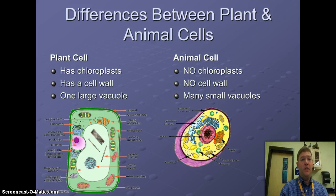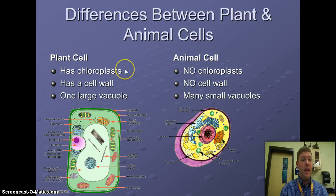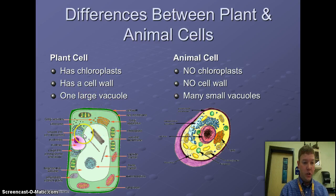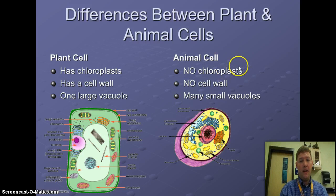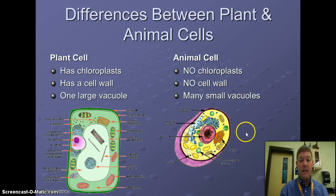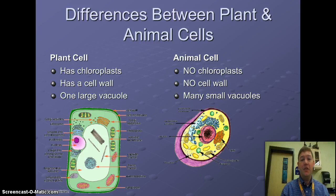As a review, what is the main difference between plant and animal cells? Here are the three main differences. Plant cells have chloroplasts which make them look green, they have a cell wall, and they have one large giant vacuole storage tank in the center. Animal cells have no chloroplasts, no cell wall — which is why they look a little more blobby — and they have many small vacuoles located throughout the cell. That's your main difference.